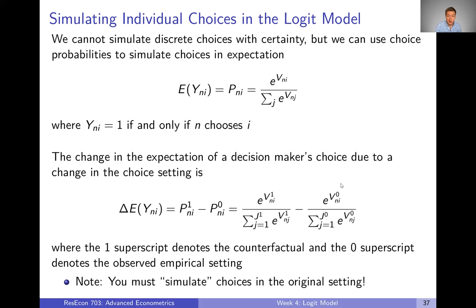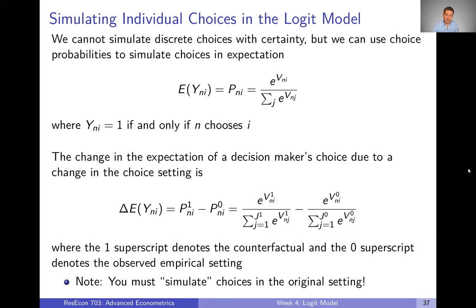One important thing to highlight: you have to calculate choice probabilities for both the counterfactual and the original setting. You can't calculate choice probabilities and then compare them to observed choices, because then you're comparing a probability to an actual zero-one variable and that doesn't work. You need to simulate choice probabilities in both the counterfactual setting and in the original observed empirical setting — it's easy to forget that you also need to do this for the original setting.